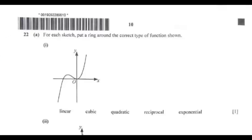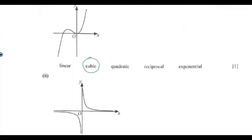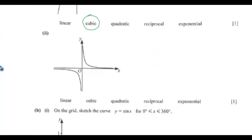Question 22a. For each sketch, put a ring around the correct type of function shown. The first sketch is a cubic. The second sketch is a reciprocal curve.